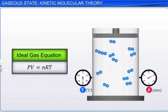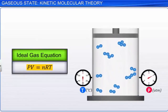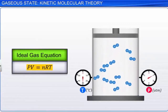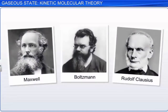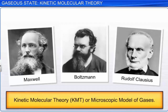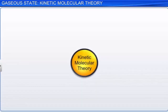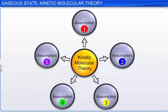We have learned that the ideal gas equation describes the behavior of gases based on experimental observations. To understand the behavior of gases at the molecular level, scientists developed a theoretical model called kinetic molecular theory (KMT), also called the microscopic model of gases. Kinetic molecular theory is a set of five assumptions that describe the behavior of molecules in a gas. Let's discuss the assumptions and how they are justified in detail.